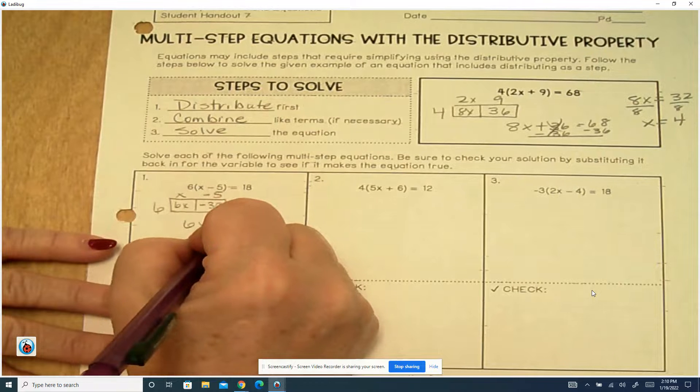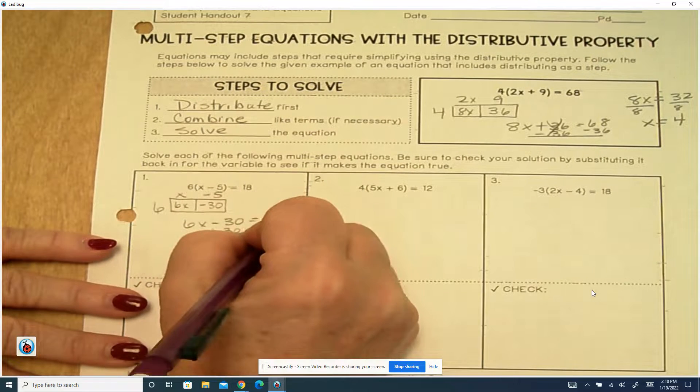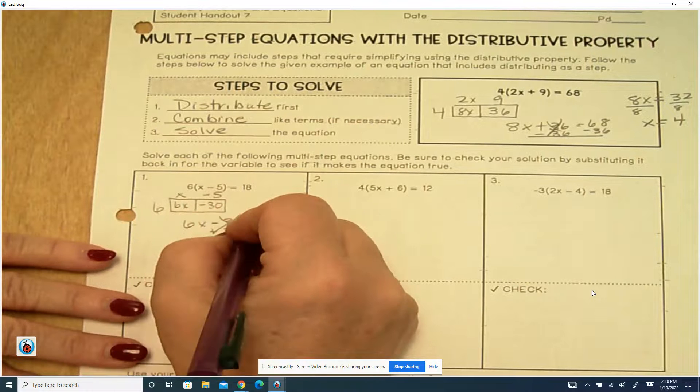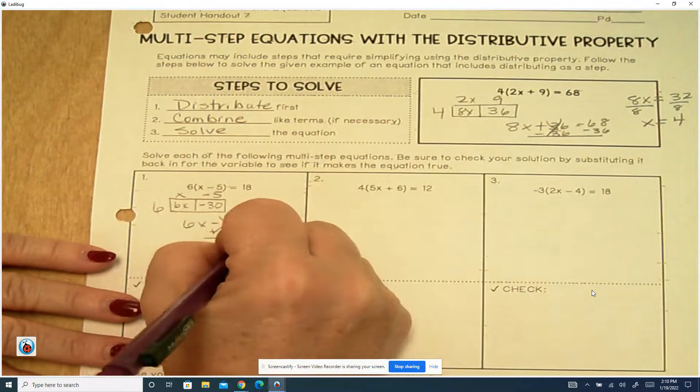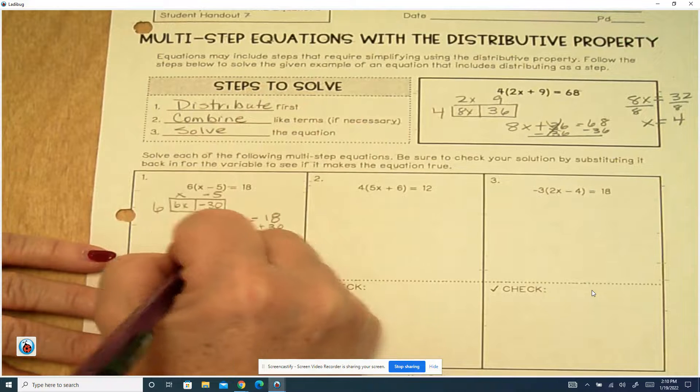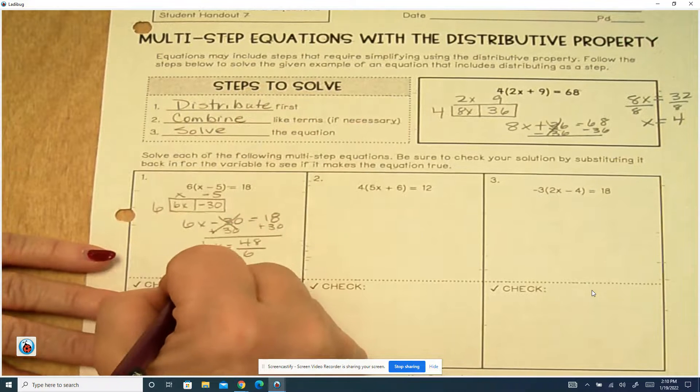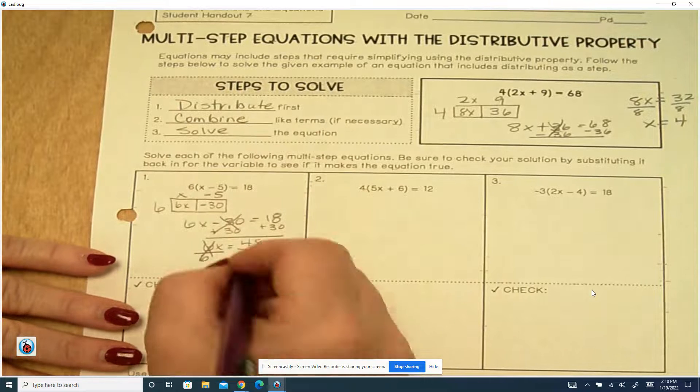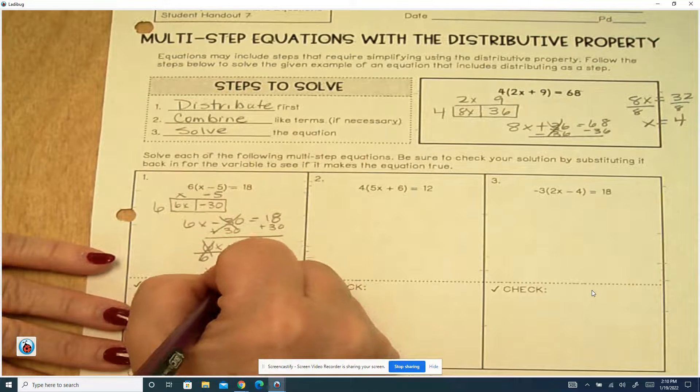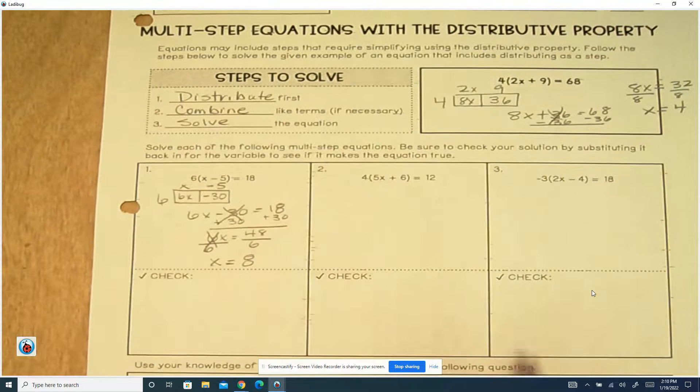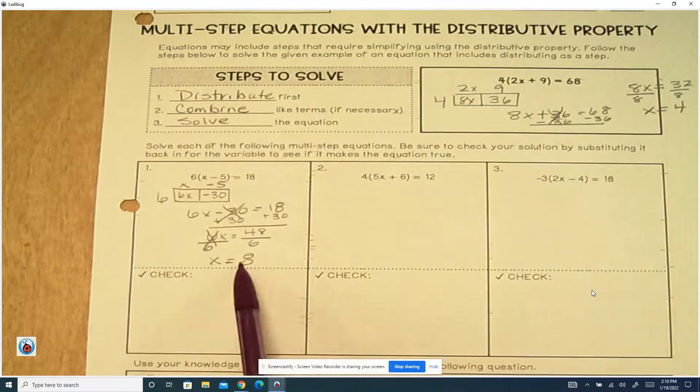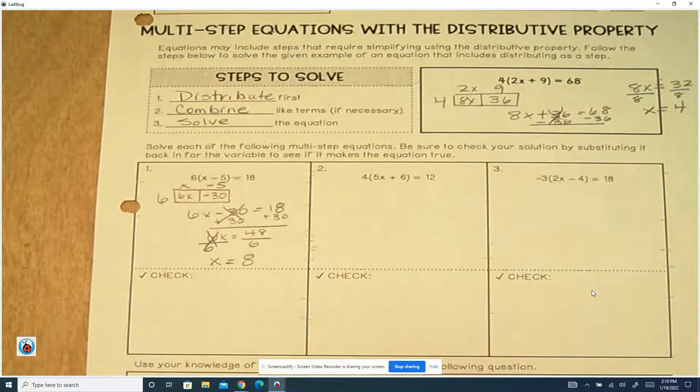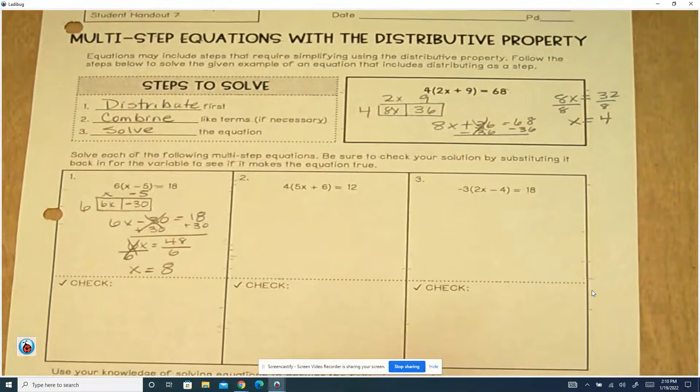We add 30 to both sides. This cancels out. 6x equals 48. I'm going to divide both sides by 6. This cancels it out. And x equals 48 divided by 6 is 8. You can check if you want to. You can put 8 minus 5 is 3. 6 times 3 is 18. I don't require my students to check.